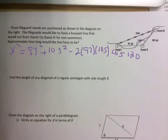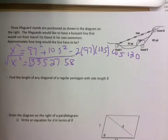Okay, so this is an easy kind where you can just throw all of that in your calculator. And when you do that, you're going to get x squared equals 33,527.58, and then you have to take the square root, so your answer is 183.1 yards.